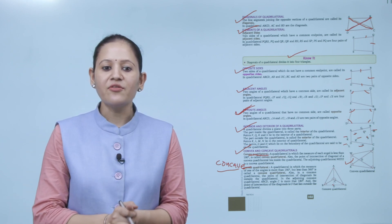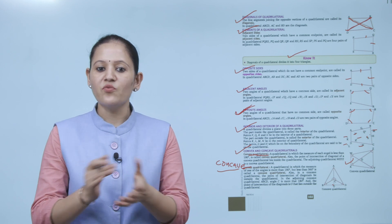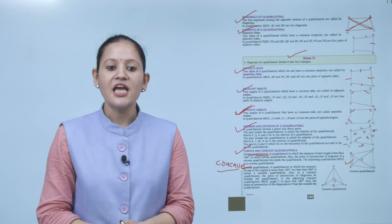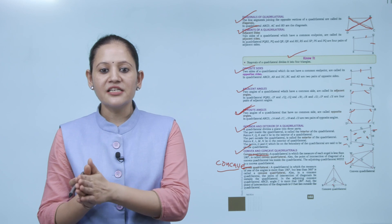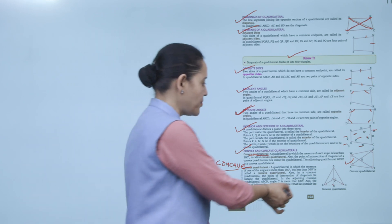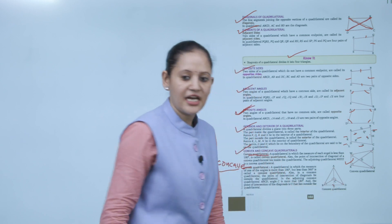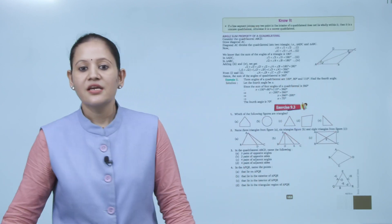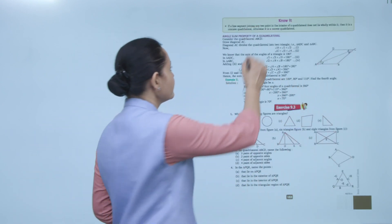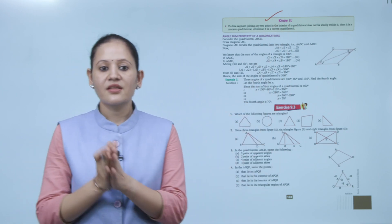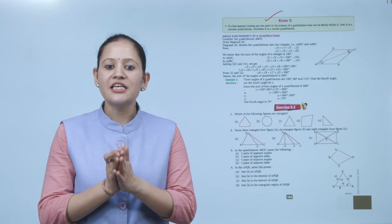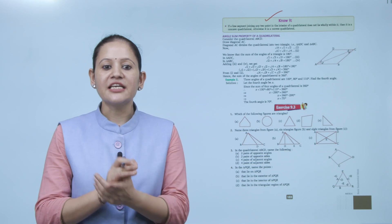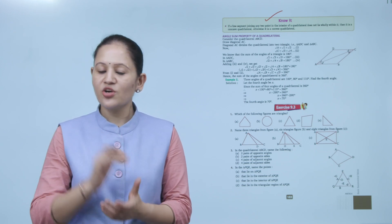In concave quadrilateral ABCD, angle C is more than 180 degrees but less than 360 degrees, and point O — the intersection of diagonals — lies outside the quadrilateral. Note: if the line segment joining any two points in the interior of a quadrilateral does not lie wholly within it, then it is a concave quadrilateral; otherwise, it is a convex quadrilateral.